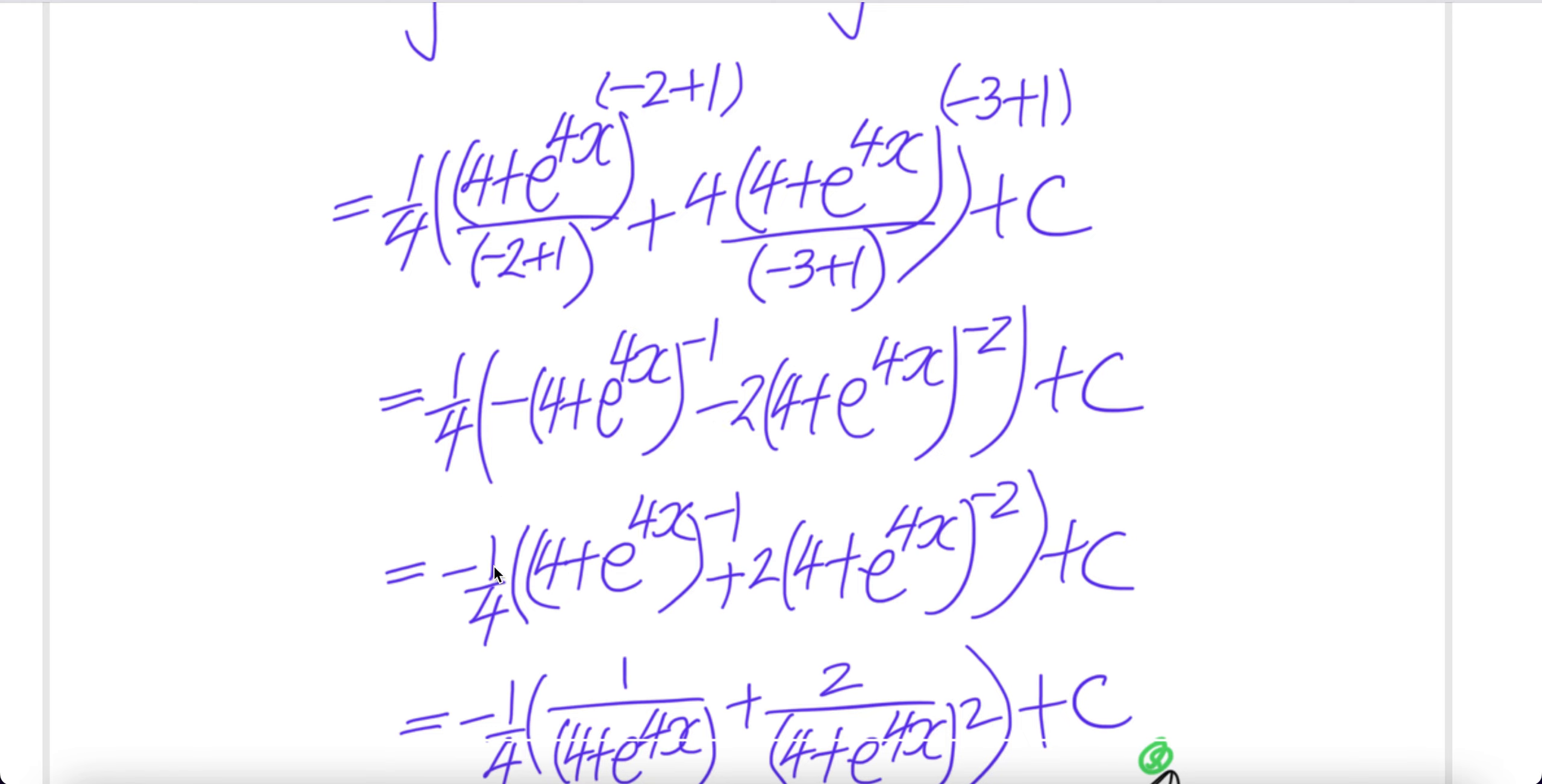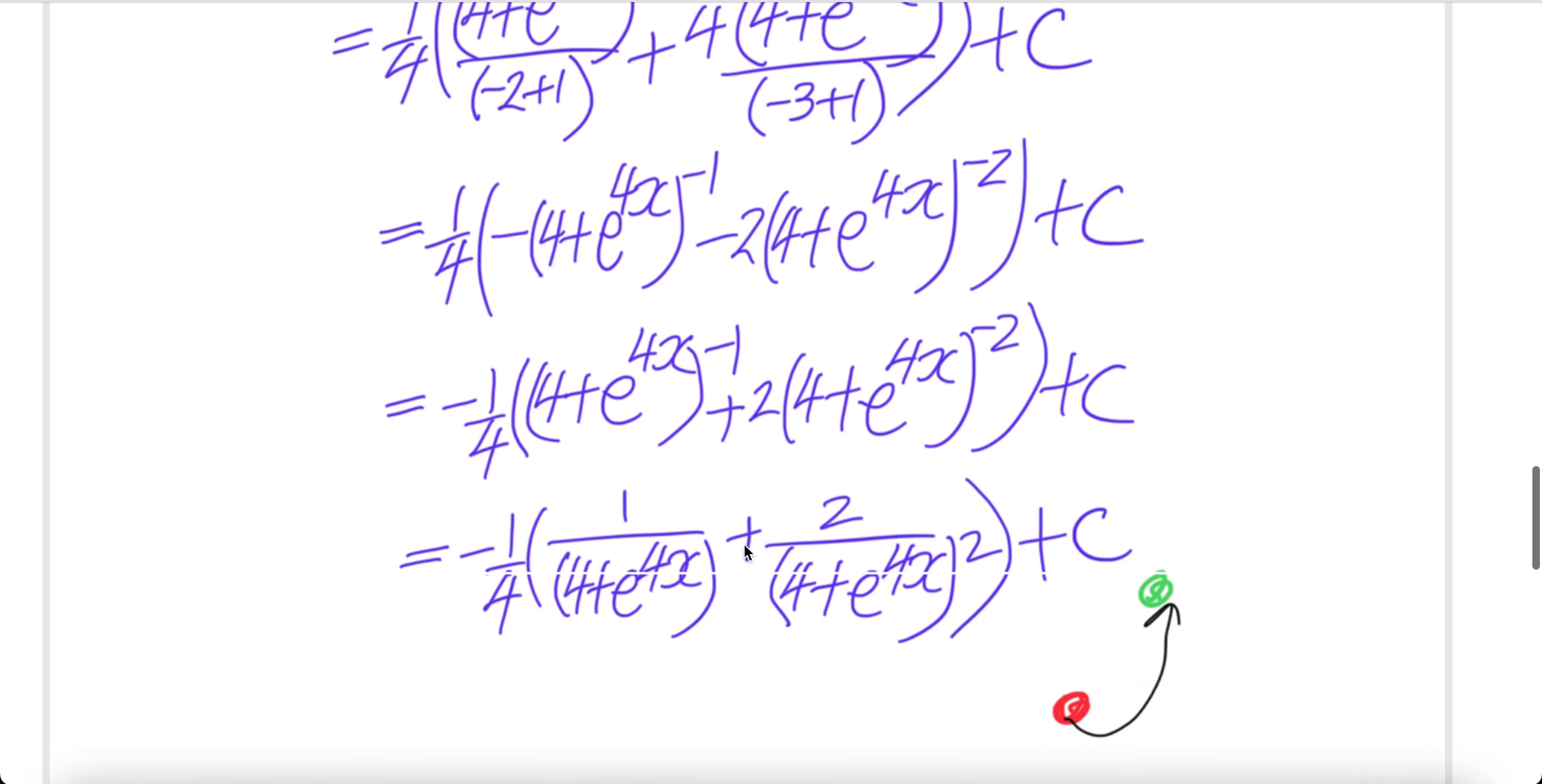When we factor, put minus 1 out. This is minus. Remember this is plus, so you need a negative. Change this to negative. Negative 2. So basically this is negative 2, and then here is that. This is 1 over 4 plus e to the power 4x to the power 2. Here 1 over 4 plus e to the power 4x. Change this to negative. Done.